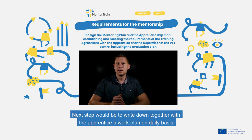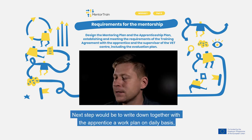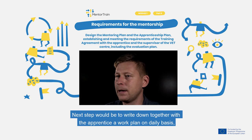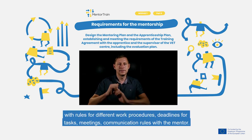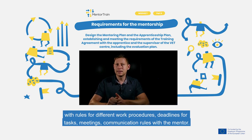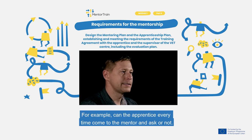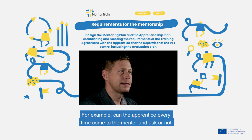The next step is to write down together with the apprentice a work plan on a daily basis, with rules for different work procedures, deadlines for tasks, meetings, and communication rules with the mentor — for example, whether the apprentice can come to the mentor at any time to ask questions or not.